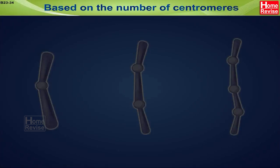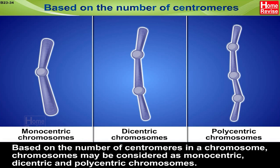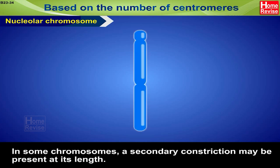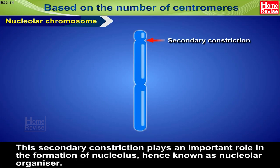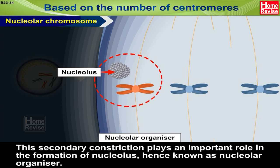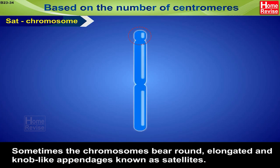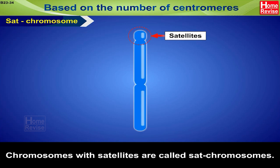Based on the number of centromeres, chromosomes may be monocentric, diacentric, or polycentric. Nucleolar chromosomes have a secondary constriction along their length; this secondary constriction plays an important role in the formation of the nucleolus and is hence known as the Nucleolar Organizer. Sat chromosomes bear round, elongated, and knob-like appendages known as satellites; chromosomes with satellites are called sat chromosomes.